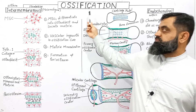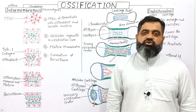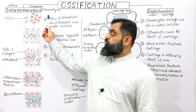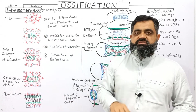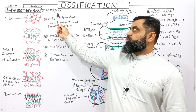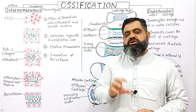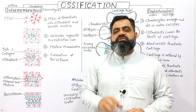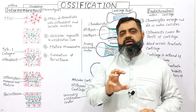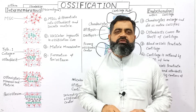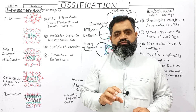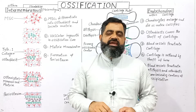The first type is known as intramembranous ossification. In this type, bone is mineralized and made hard within a membrane known as mesenchyme. Mesenchymes are specialized stem cells used to make bone within a membrane to form compact bone or spongy bone — usually flat bones. This type of ossification takes place in the bones of the skull, facial bones, and clavicle.